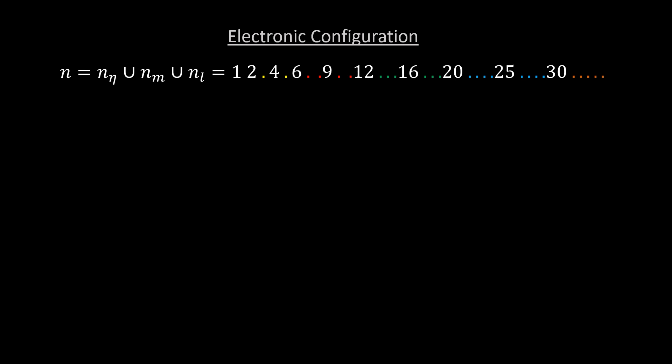So the constraint to the nm's is given by the following inequality. Let l minus be this and l plus be this. They are the values of the nl's that bound the chosen n eta. For example, let's choose an arbitrary n eta, say 25. The square root of 25 is 5. So l plus is 25 plus 5, which is equal to 30, and l minus is 25 minus 5, which is equal to 20.